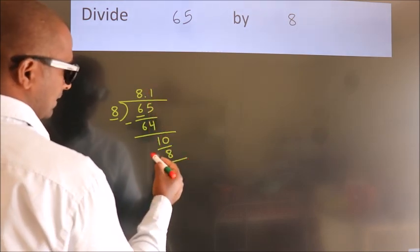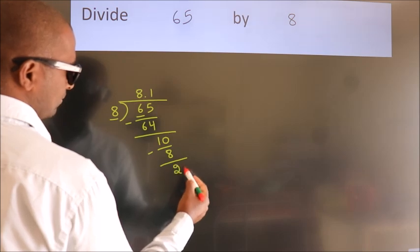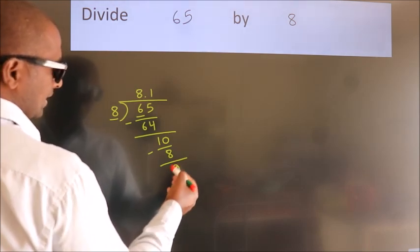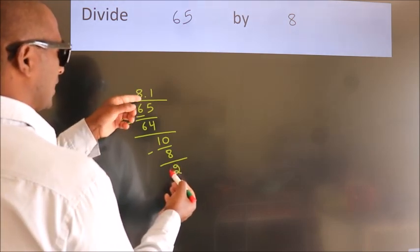Now we subtract. We get 2. After this, we already have the decimal.